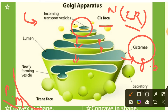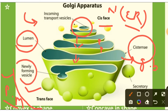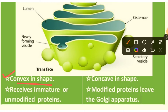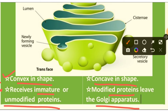The inner part of the cisternae is called the lumen. The trans phase is the phase present towards the plasma membrane, where newly forming vesicles containing modified proteins and lipids leave the Golgi complex. Some vesicles are called secretory vesicles or lysosomal vesicles. The cis phase is convex in shape and the trans phase is concave in shape.